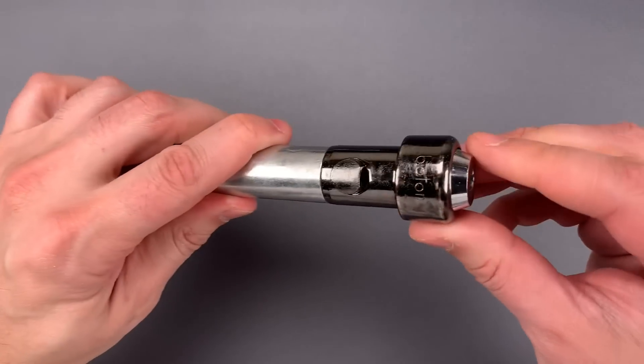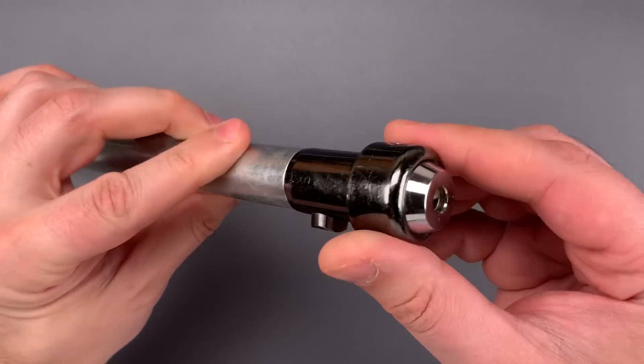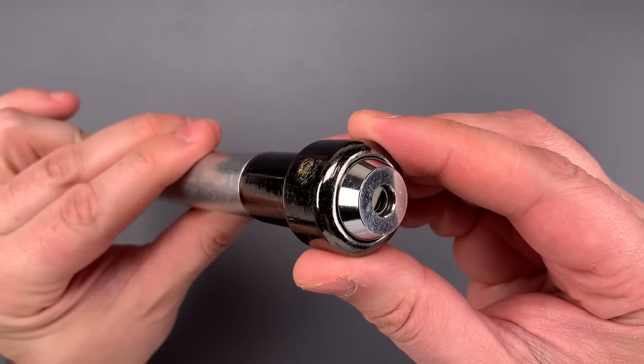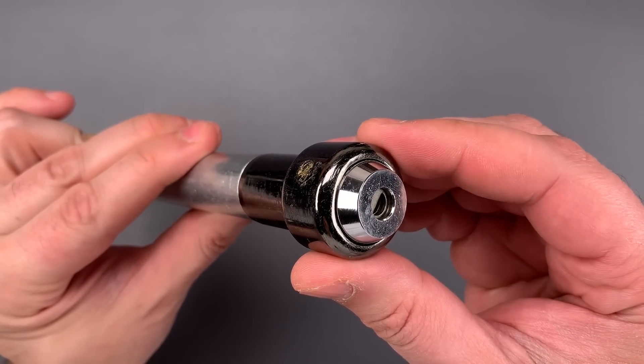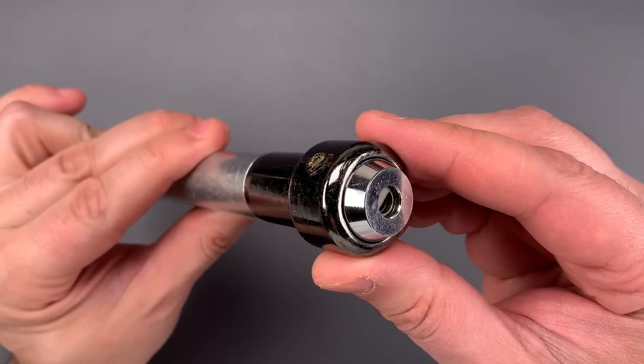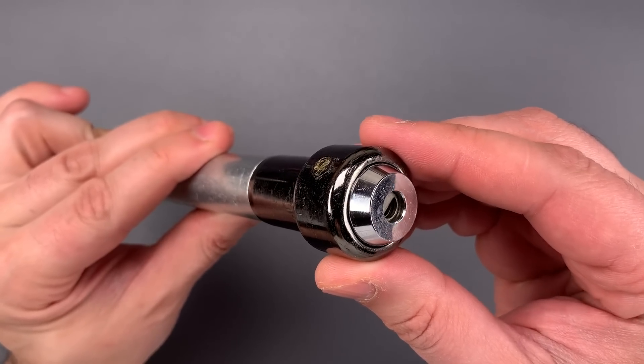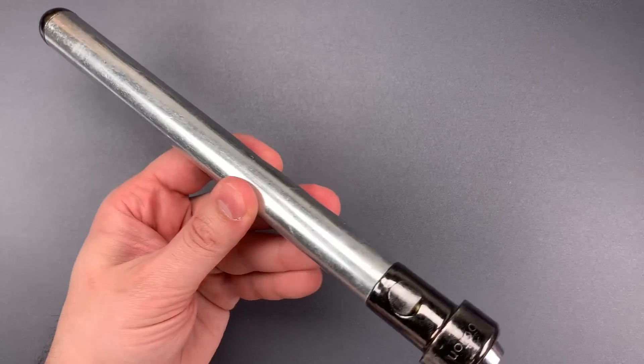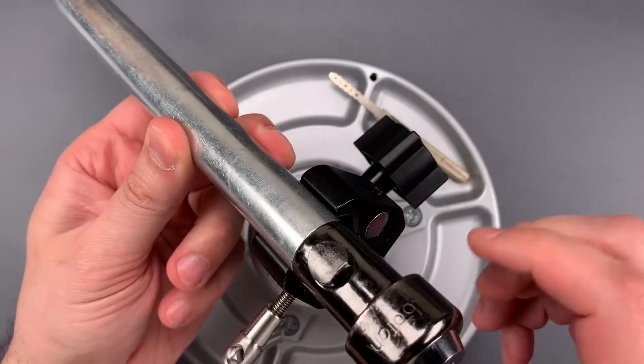This particular one is made by the Batten Lock Company and seems to have their 6000 series disc detainer core. You can see it has an Abloy Classic-style semi-circular keyway, there are 8 discs behind it, and no false gates, so I'm not anticipating an overly difficult pick. So, let's get this in the vise and see what it takes to pick it open.